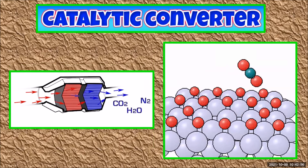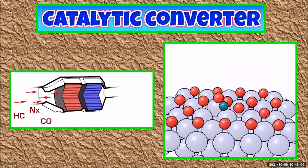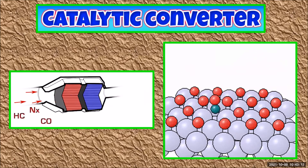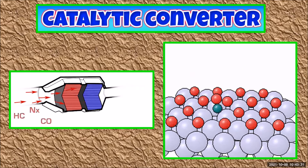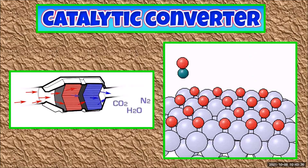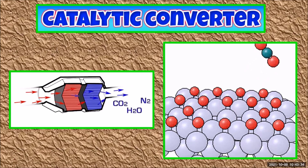The catalytic converter in a car exhaust works using platinum, palladium and rhodium catalysts. These catalysts are finely divided to make sure they have a really large surface area. The pollutants — carbon monoxide, nitrogen oxides and unburnt hydrocarbons — undergo reactions with oxygen and produce the harmless gases nitrogen and water vapour, as well as carbon dioxide. In the diagram, we see oxygen adsorbed on the catalyst; carbon monoxide is adsorbed and reacts with the oxygen atom to make carbon dioxide.